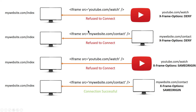Let's consider the second scenario. Here we have the same page — mywebsite.com/index — which has an iframe pointing to a URL on the same website, mywebsite.com/contact, while XFrame Options is still set to deny. Again, the browser will refuse to connect because XFrame Options is set to deny.